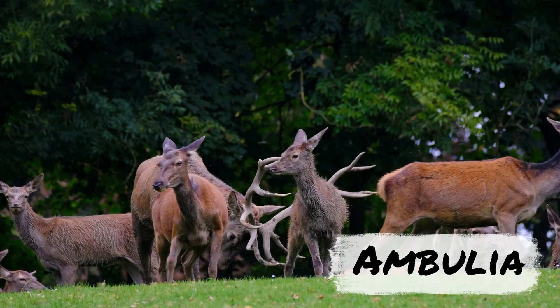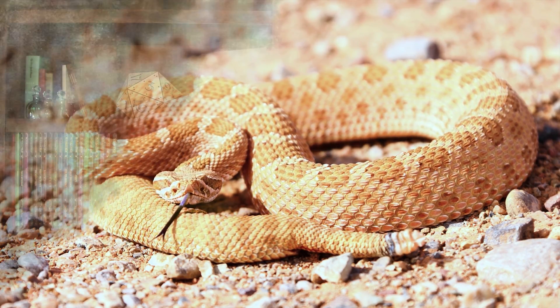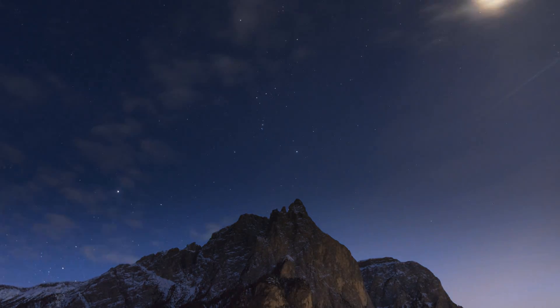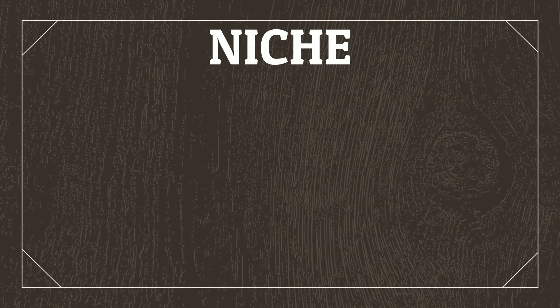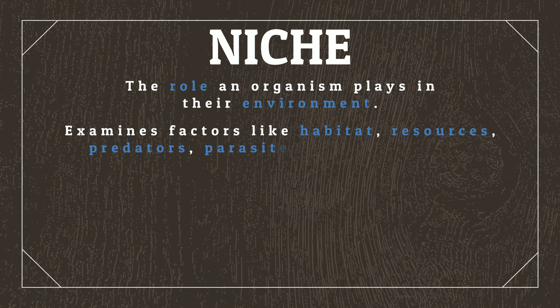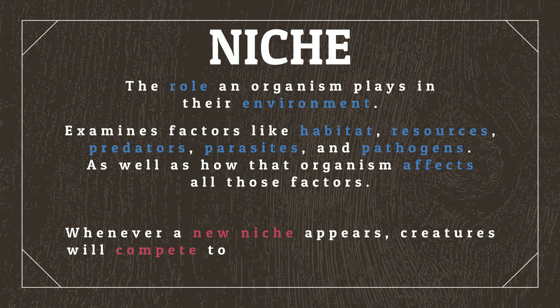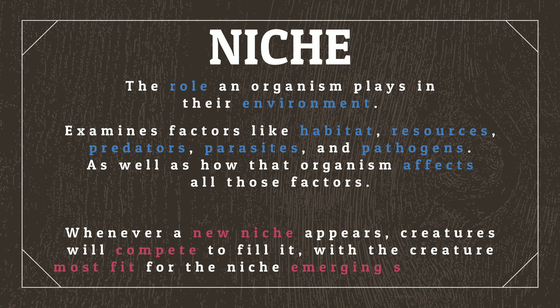Finally, we have the Ambulia kingdom, which will include all of the creatures that we'll worldbuild moving forward. Although their name means 'walkers,' obviously not all creatures will evolve to walk — though this kind of generalised misnomer is reasonably common in scientific classifications, and still serves our purposes. Across the course of 3 billion years, life would continue to diversify to fill all available niches. A niche, in ecological terms, refers to the role an organism plays in their environment, examining factors like habitat, resources, predators, parasites, and pathogens, as well as how that organism affects all of those factors. A niche is an organism's job, and whenever a new niche appears, creatures will compete to fill it, with the creature most fit for the niche emerging successful.